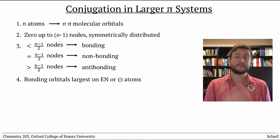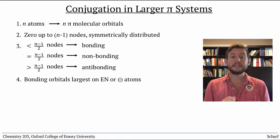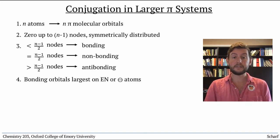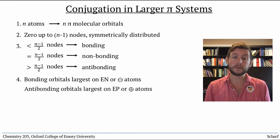Number four, bonding orbitals tend to be larger on the more electronegative atoms or those with a negative charge. While antibonding orbitals are largest on electropositive atoms or those with positive charges.